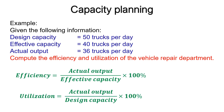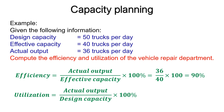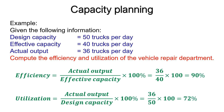Simply substitute in these equations. The efficiency equals 36 divided by 40, multiplied by 100, equal to 90%. And the utilization equals 36 divided by 50, multiplied by 100, equal to 72%.